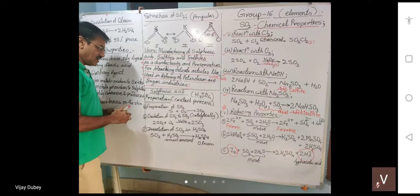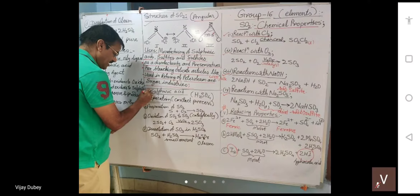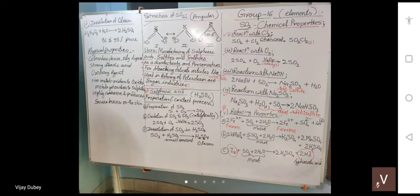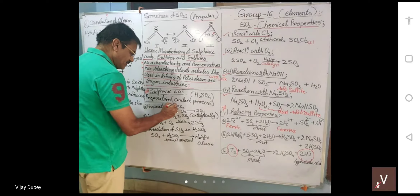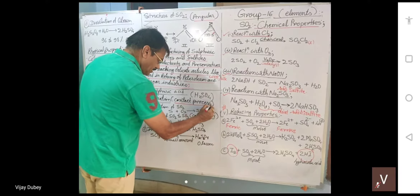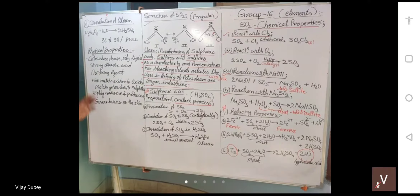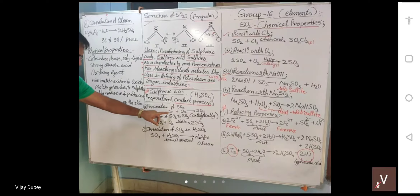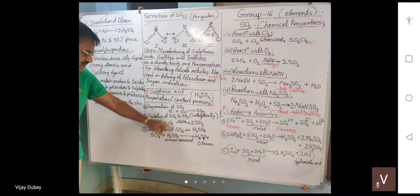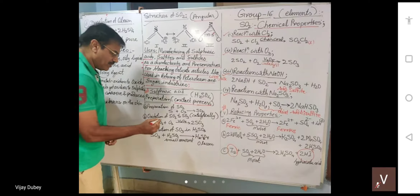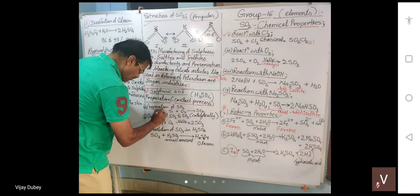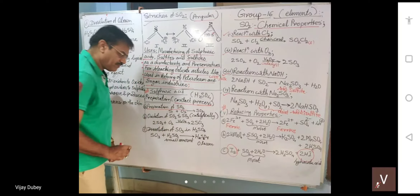Next comes sulfuric acid, H2SO4. Its preparation uses the contact process — a process taking place in four steps. First, sulfur is taken and oxidized to get sulfur dioxide. This is the preparation of sulfur dioxide — step one.